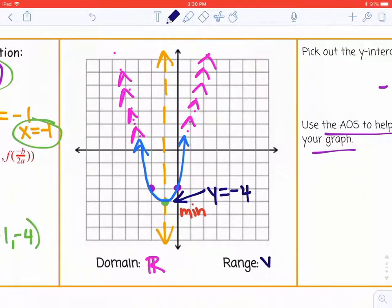So our range is all points greater than or equal to -4. It's not unlimited values for the range. You have to look at your vertex to help you pick it out.